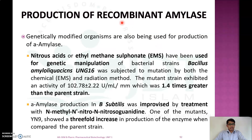We can also improve or modify the alpha amylase gene using mutagens like nitrous acid or ethyl methane sulfonate for genetic modification of bacterial strains like Bacillus amyloliquefaciens, giving approximately 1.4 times greater yield than the parent strain. Alpha amylase production in Bacillus subtilis can also be improved by treating with N-nitrosoguanidine, resulting in a three-fold increase in enzyme production compared to the parent strain.